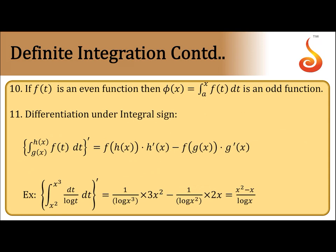Differentiation under the integral sign is called Leibnitz's theorem. The derivative of integral from g(x) to h(x) of f(t)dt is the value of the function at the upper limit multiplied by the derivative of the upper limit, minus the value at the lower limit multiplied by the derivative of the lower limit.